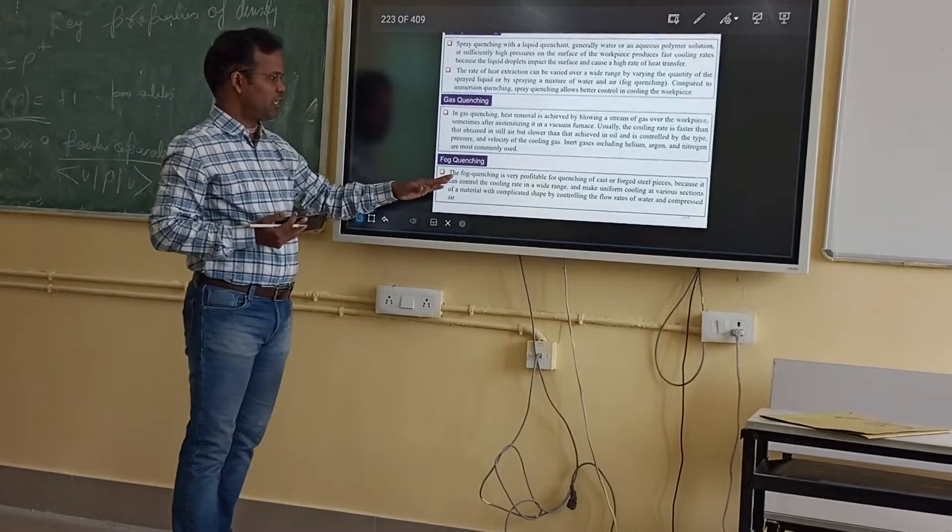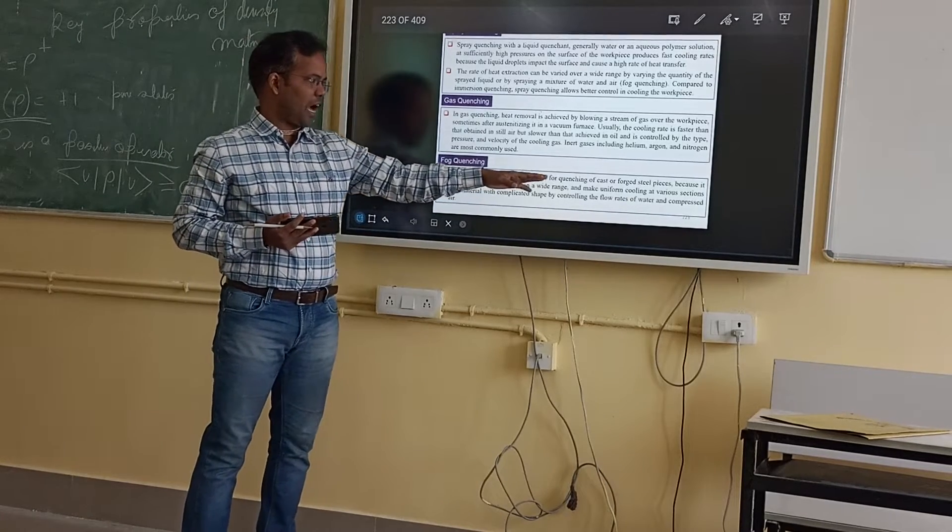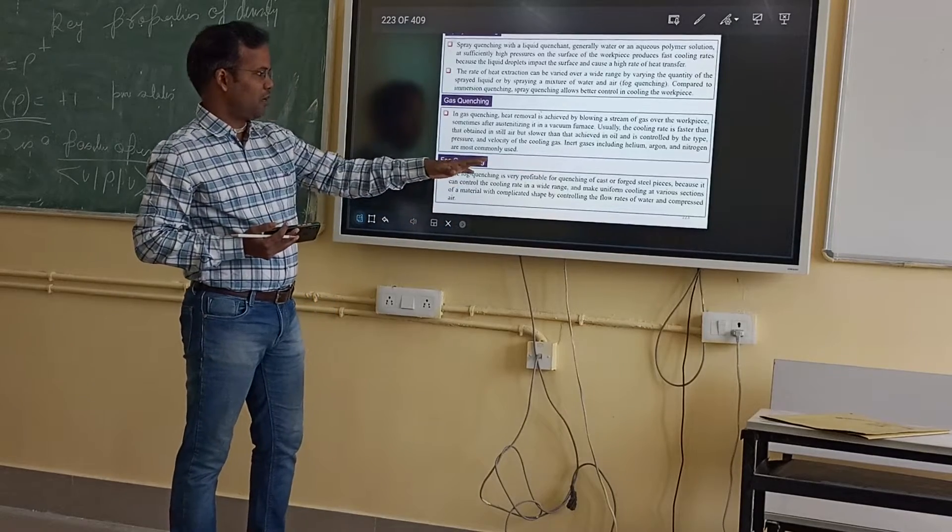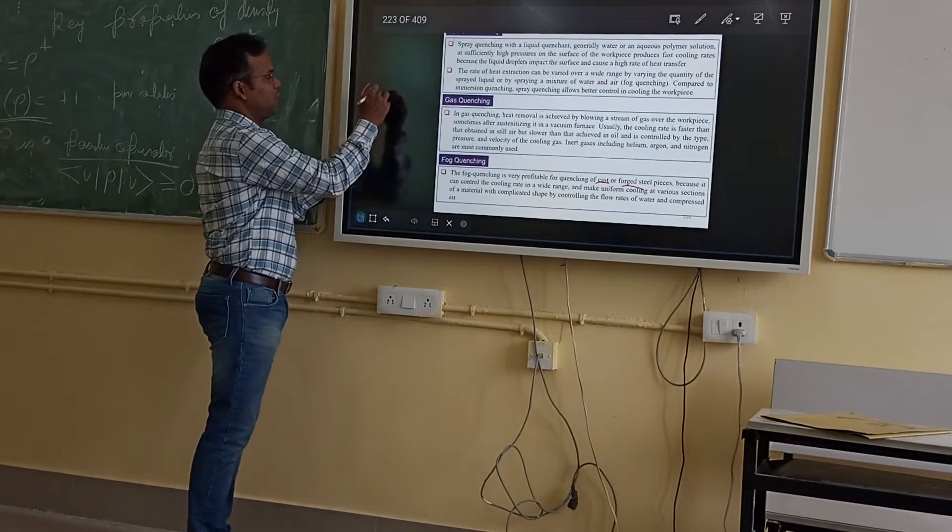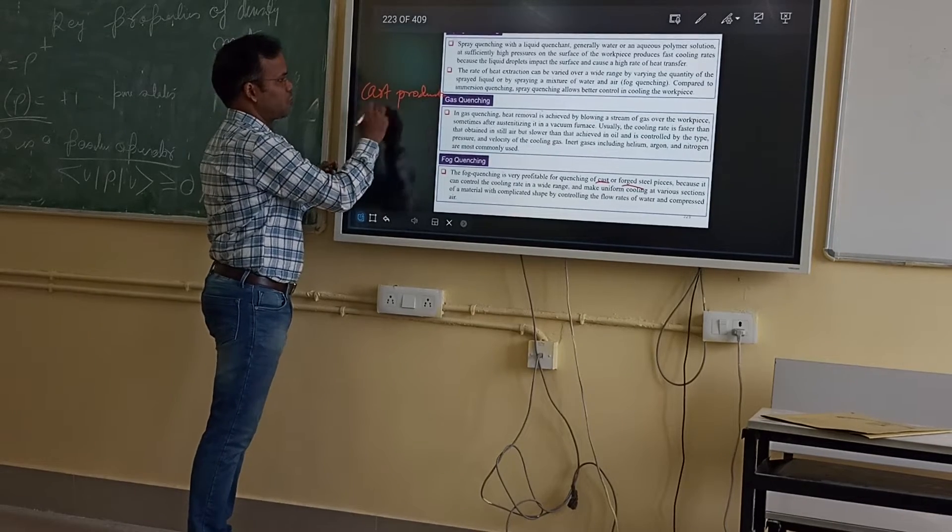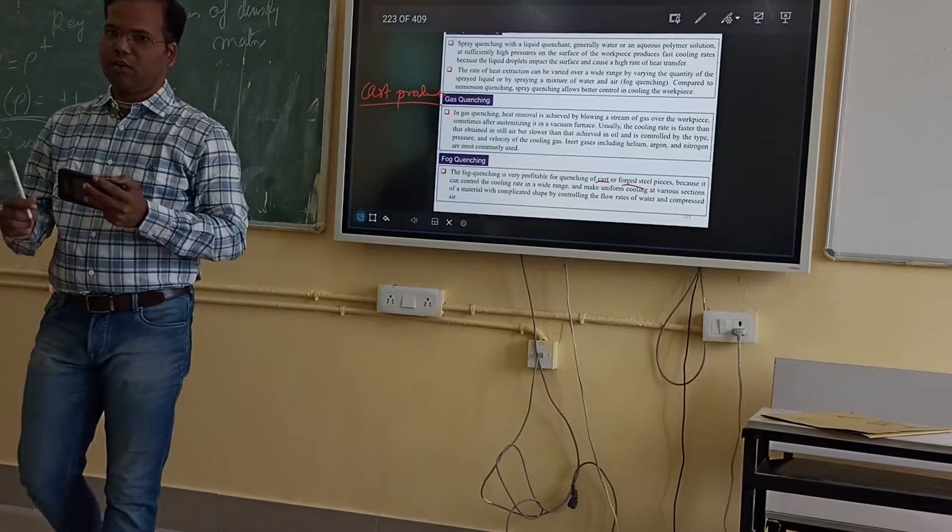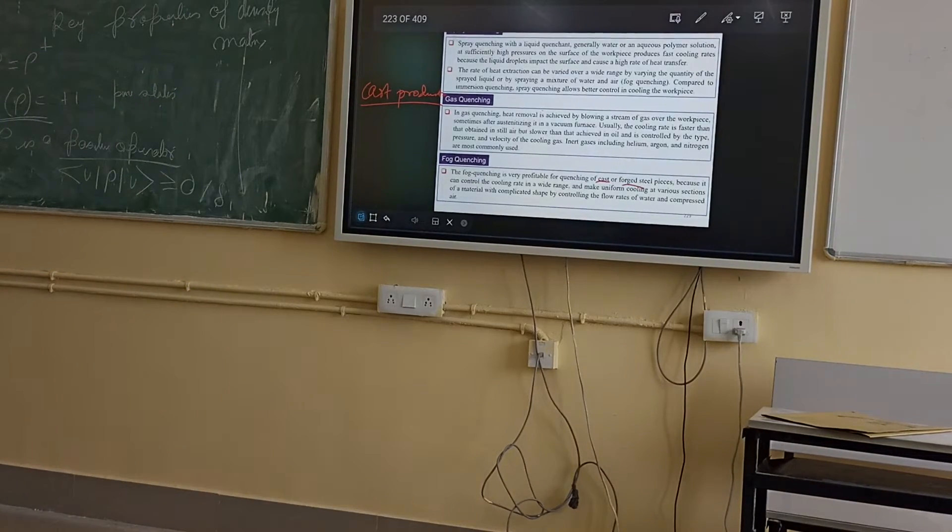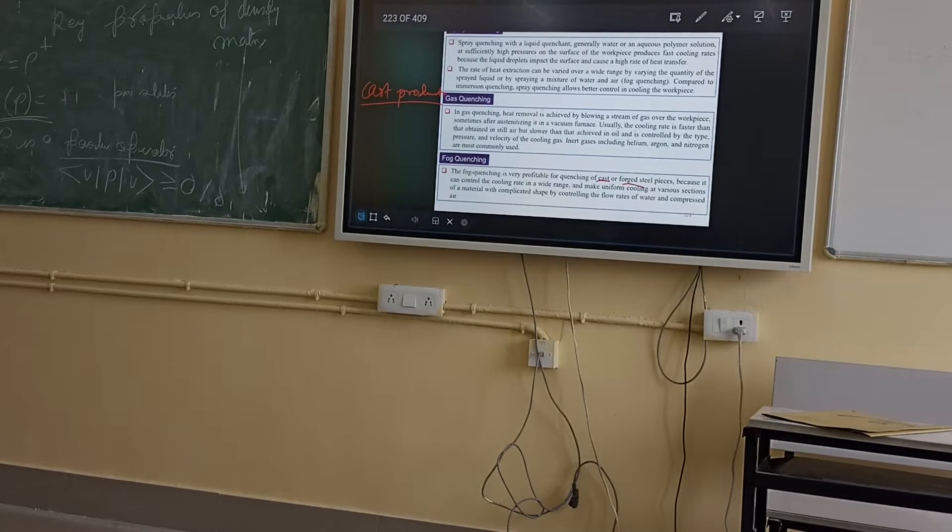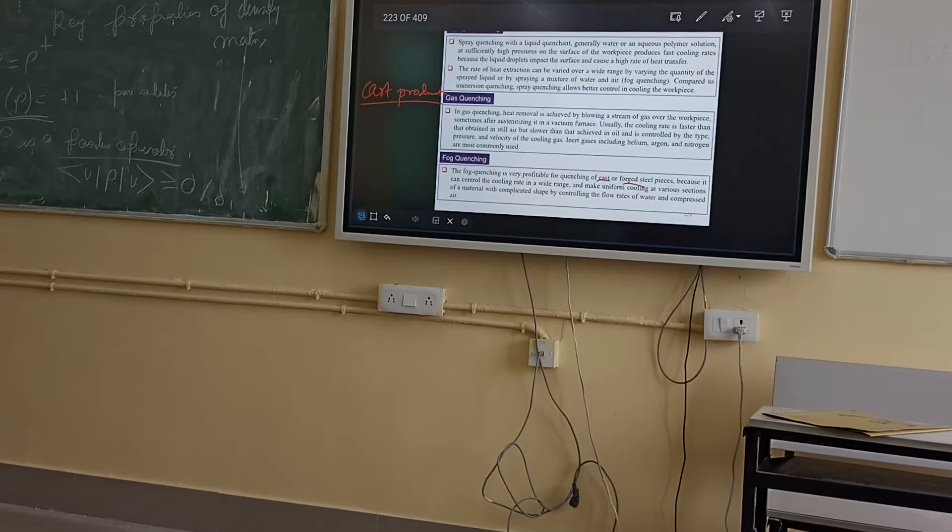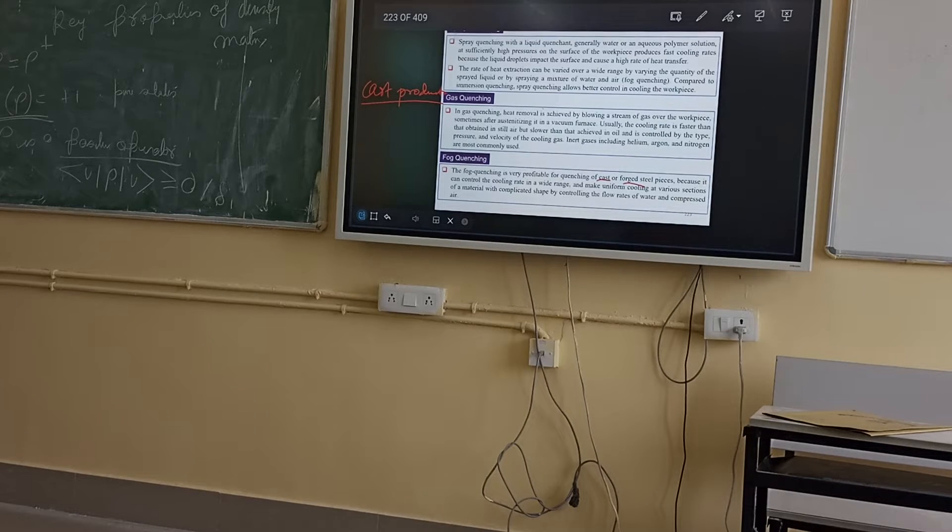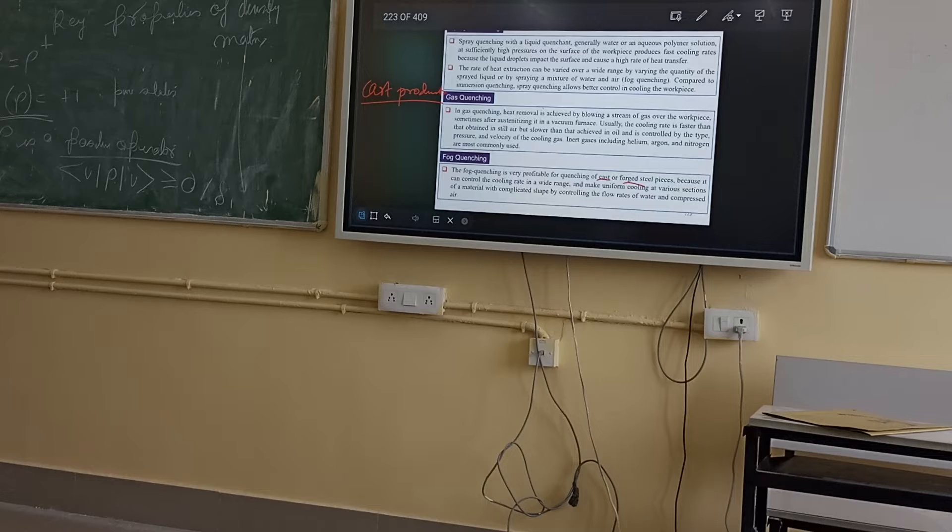Fog quenching is very suitable for quenching of cast and forged steels. Cast structures can be done by fog quenching because these are actually very huge products. The size of cast products are very huge. Cast products like earth movers used in mining are very huge structures. The wheels of earth movers, you cannot make by forging or welding, you have to cast it.